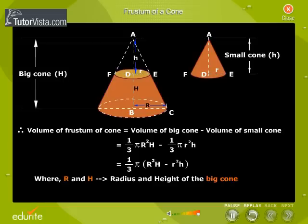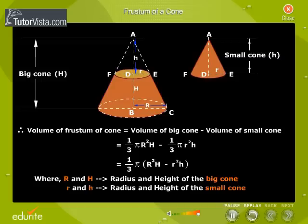Where R and H are the radius and height of the big cone and small r and h are the radius and height of the small cone.